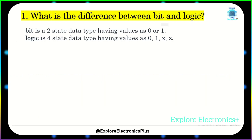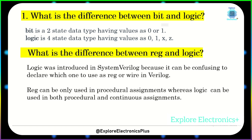What is the difference between bit and logic? Bit is a two-state data type having values 0 or 1, where logic is a four-state data type having the values 0, 1, x, and z.